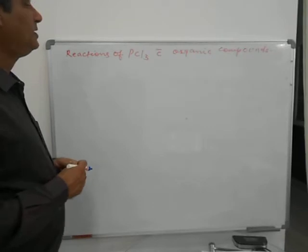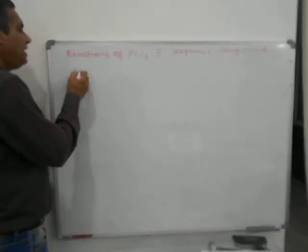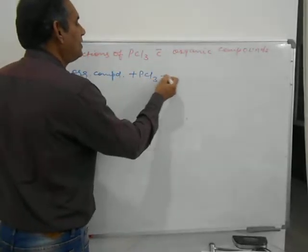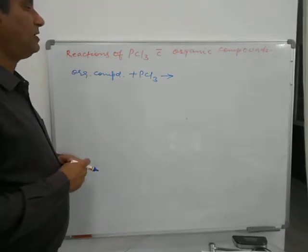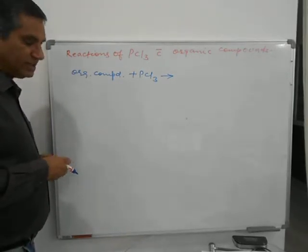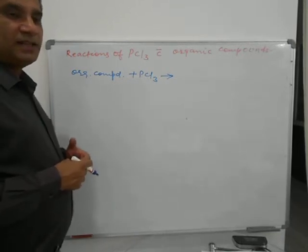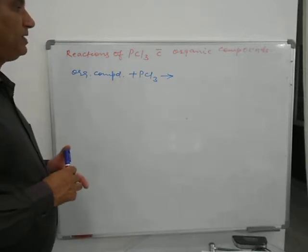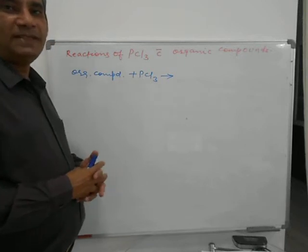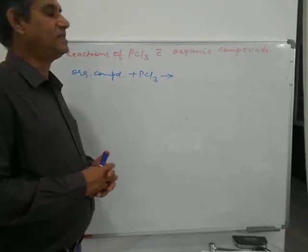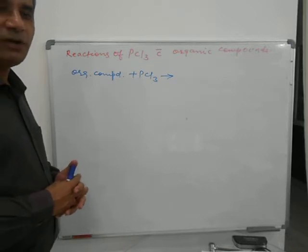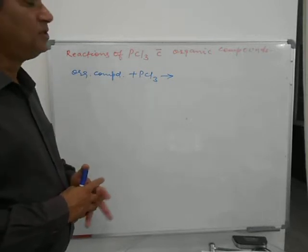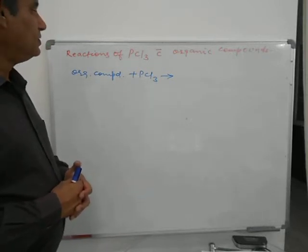Whenever any organic compound reacts with PCl3, we will also discuss how to determine whether that reaction is possible or not — that is very easy. But you should know valency and you should know balancing. Only then can you understand this concept. If you don't know the valency of elements or if you don't know how to balance chemical reactions, then it is very difficult to manage organic chemistry.